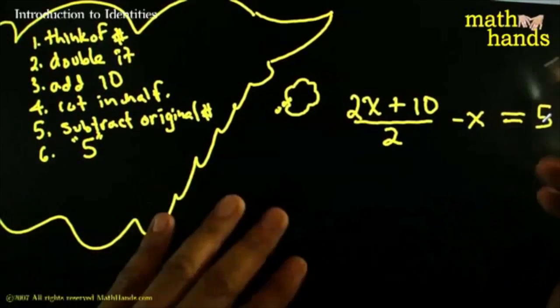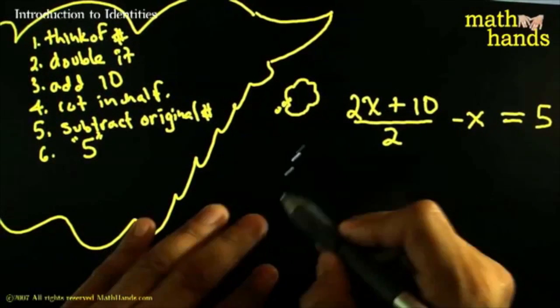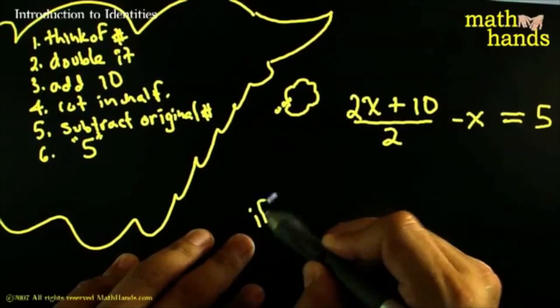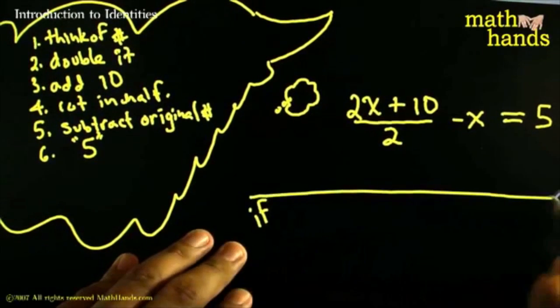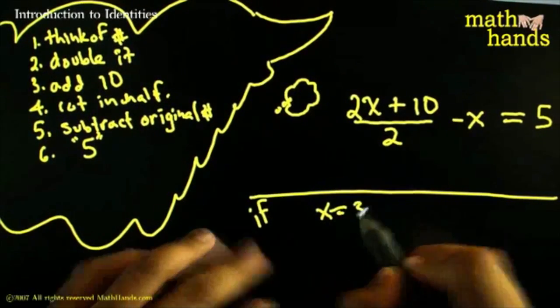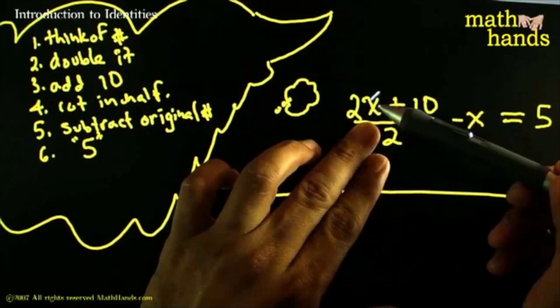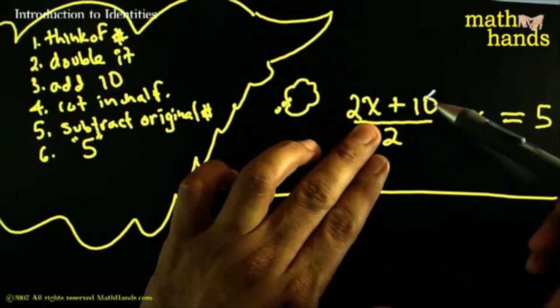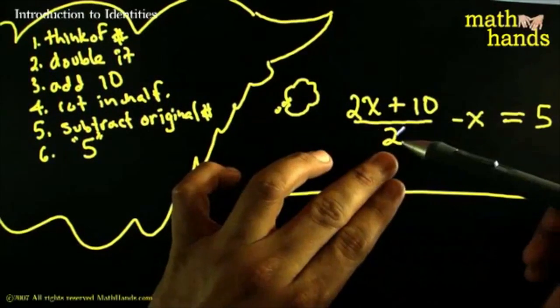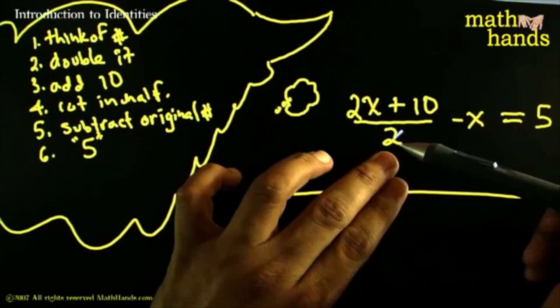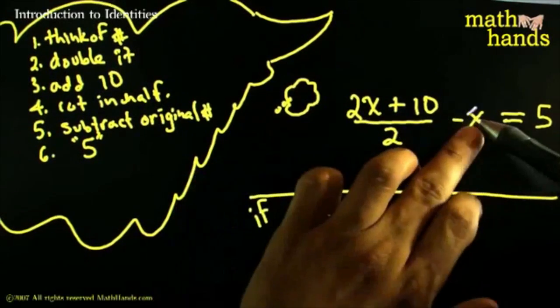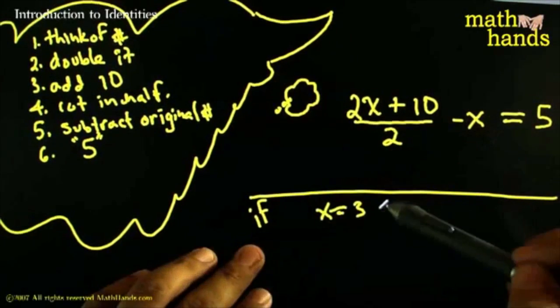And I'm thinking, no way. So you try it. What if I had thought about, what if, let's try one case here. What if x had been 3? If x had been 3, you would have doubled it. That would have given you 6. 6 plus 10 is 16. 16 divided by 2 is 8. You take away the original 3. That's 5. Whoa, it worked for 3.